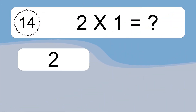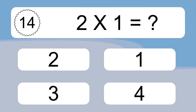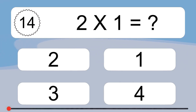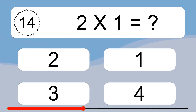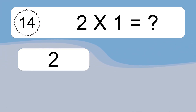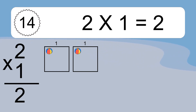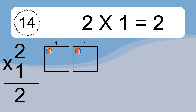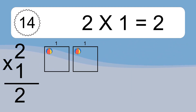2 times 1 equals what? We have 2 boxes, and each box has 1 colorful ball inside. If you count all the balls in all the boxes together, you will have 2 times 1 balls. This equals 2 balls.